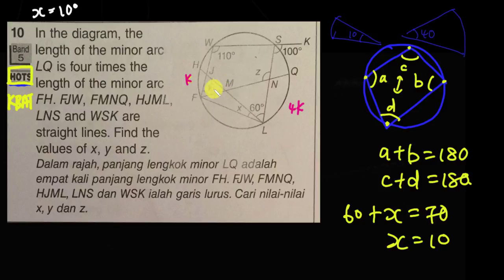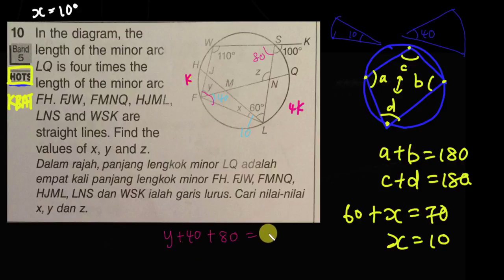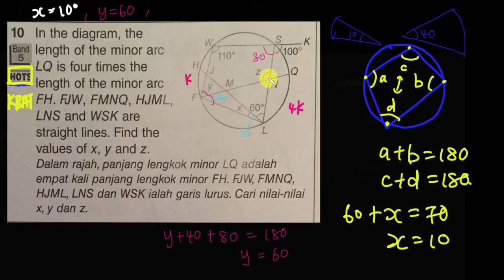Now this angle is 40° and this one is 10°, so we know the opposite angle here needs to be 80°. Using the cyclic quadrilateral property, y plus 40° plus 80° equals 180°, so y equals 60°. For z, looking at the triangle which has angles 70°, 40°, and 70°, z equals 180° minus 70°, which gives z equals 110°.